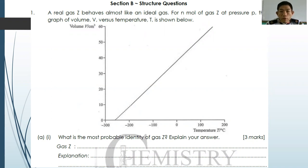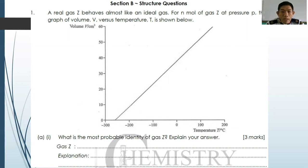Let's have a look at the questions for the structure question section B. Question number one: a real gas Z behaves almost like an ideal gas. For N mol of gas Z at pressure P, the graph of volume versus temperature is shown. What is the most probable identity for gas Z? Either hydrogen or helium will give you the one mark here.